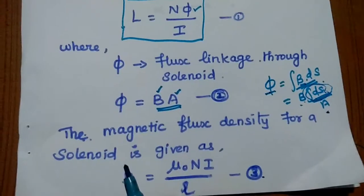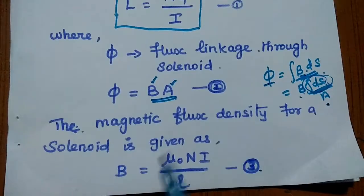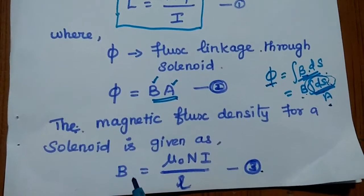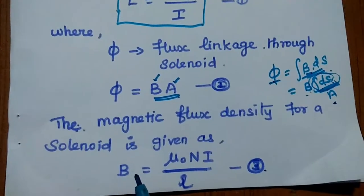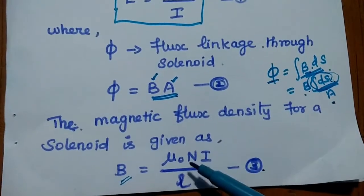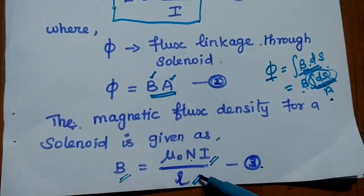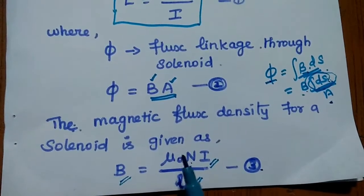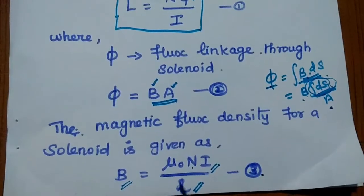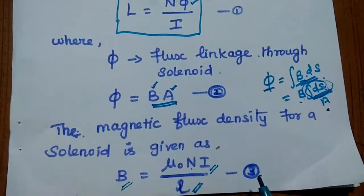Magnetic flux density for a solenoid is given as — as we have already derived the magnetic flux density in the previous classes, we can directly use this formula. Magnetic flux density for a solenoid depends on the number of turns, the total current passing through it, and the length of the solenoid. Flux density is directly proportional to number of turns and current, and inversely proportional to the length of the solenoid. We can consider this as the third equation.